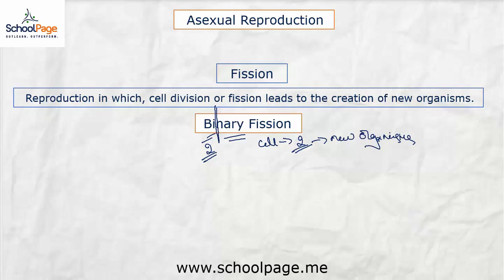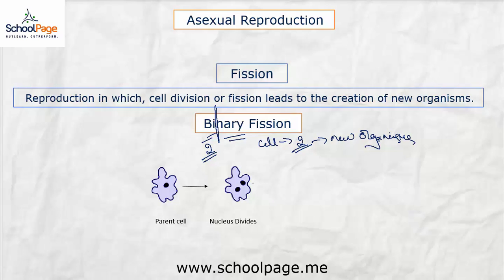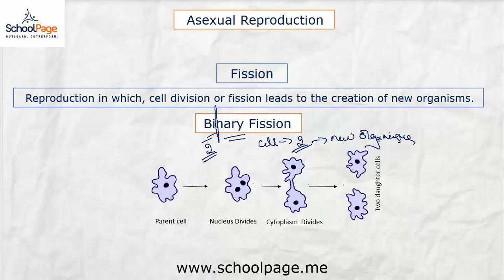Here is the parent cell, which has grown and is ready for reproduction. The second step is nuclear division. Recall that the nucleus is the control unit of the cell, and before the cell divides it is necessary for the nucleus to divide first. Then the cytoplasm divides along with the cell membrane, giving rise to two daughter cells. This is binary fission in amoeba — note that after reproduction, there is no parent cell remaining.